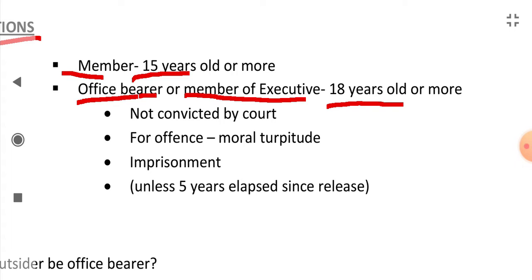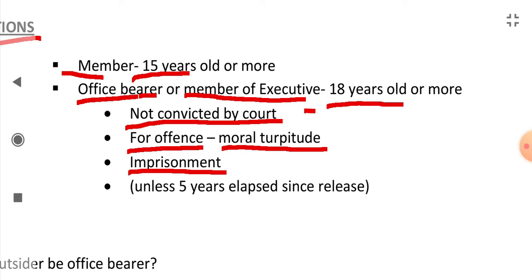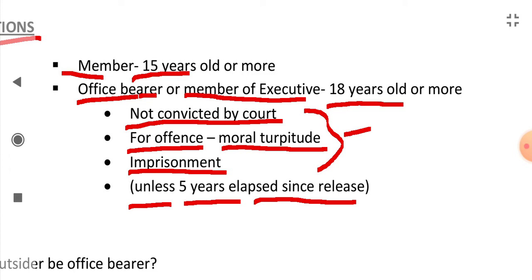Additional conditions to be an office bearer: the person should not be convicted by a court for any offense involving moral turpitude — that is, an offense which is immoral in nature, which violates certain standards of society and hurts the sentiments of the society — and he should not have been imprisoned. If he has been convicted for any offense involving moral turpitude and has been imprisoned, he cannot be an office bearer unless five years have elapsed since his release.